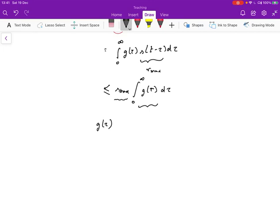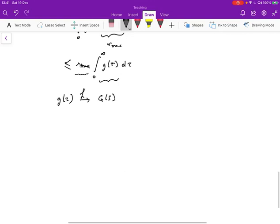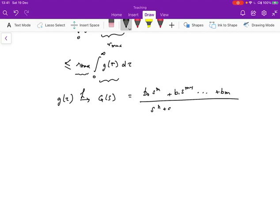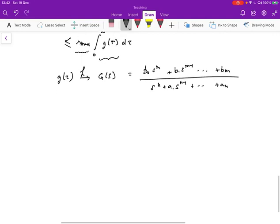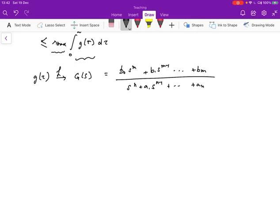To see that, we should first figure out, let's look at this Laplace transform. So the Laplace transform of g tau is going to be g of s. And it turns out that for an LTI system, it can always be put in the form like this: b0 s to the m plus b1 s to the m minus 1 plus bm over s to the n plus a1 s to the n minus 1 plus an. So in other words, for an LTI system, the Laplace transform always looks like the ratio of two polynomials.